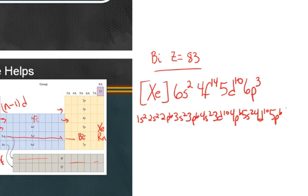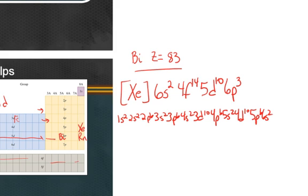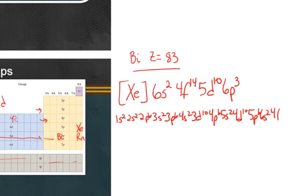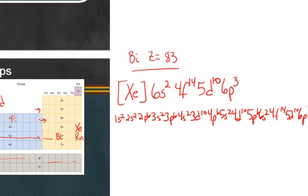And then the rest would be the same here, 6s2. Oh, this is long. 4f14, 5d10, 6p3.